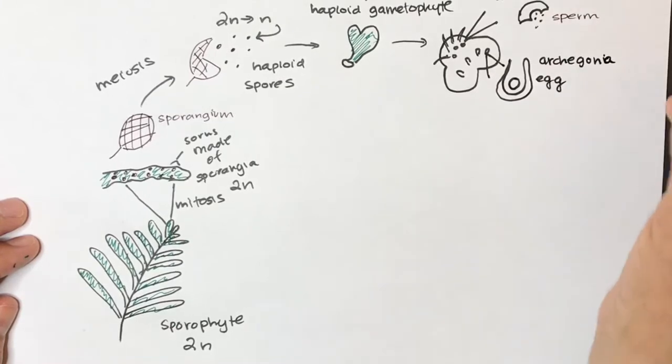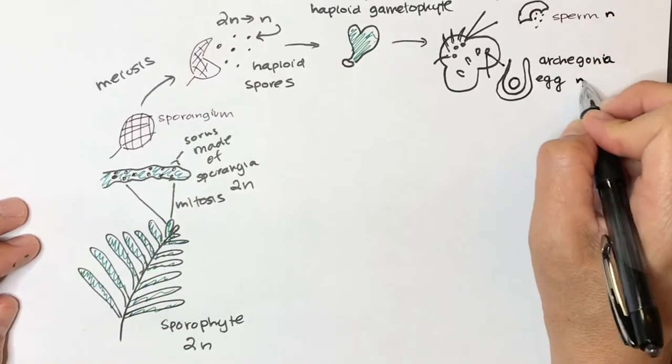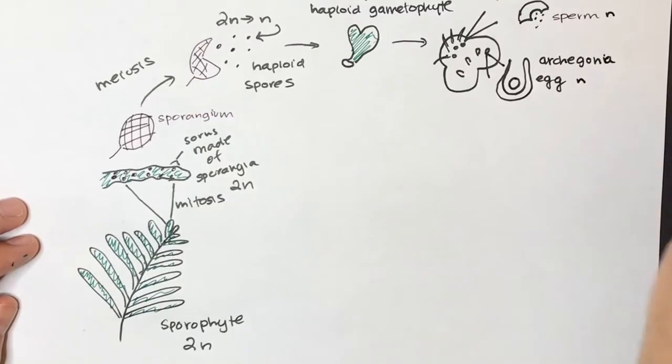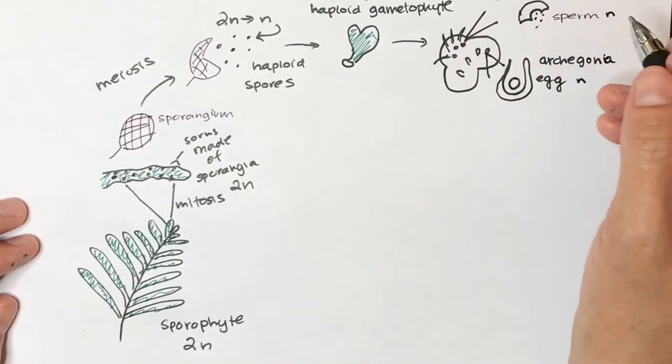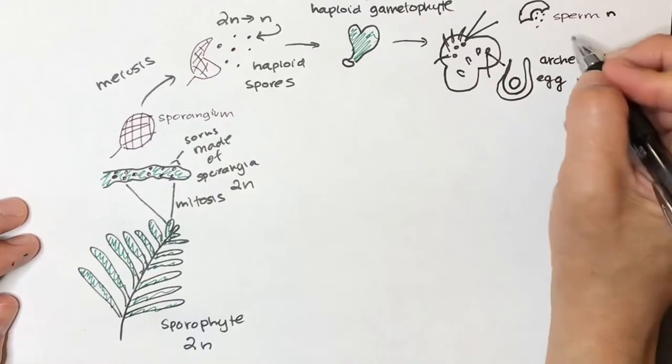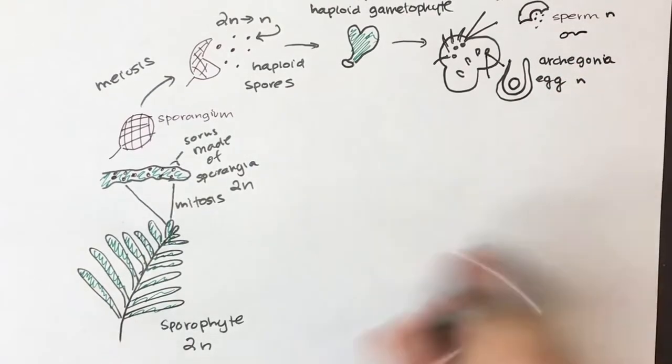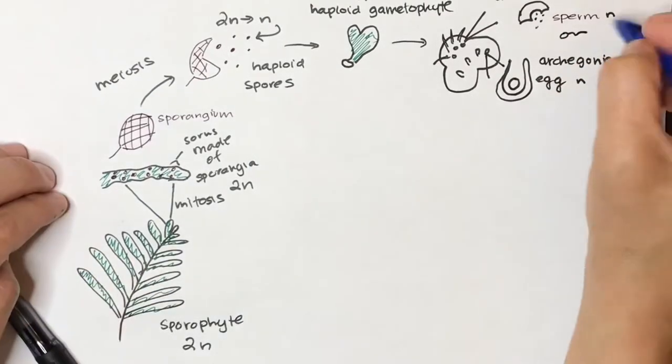This is one archegonia. So these sperms are also haploid, as are these eggs. The sperm will travel in water. These are flagellated sperm. So they need water to travel. They're going to travel in water to the eggs.